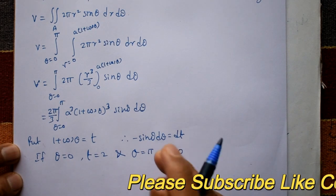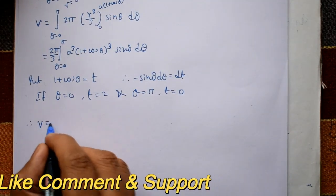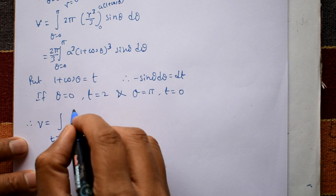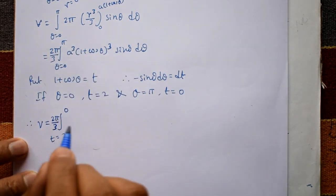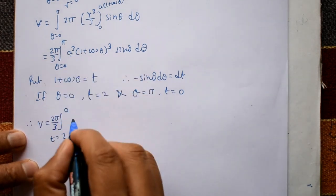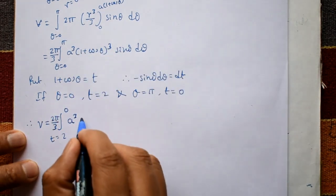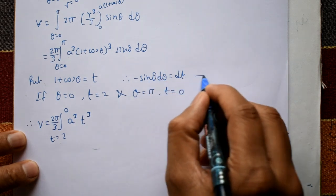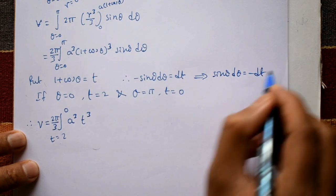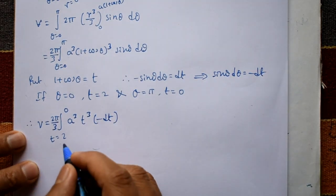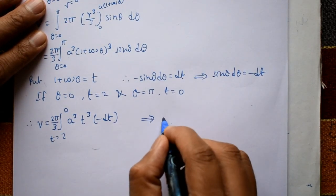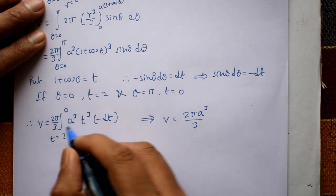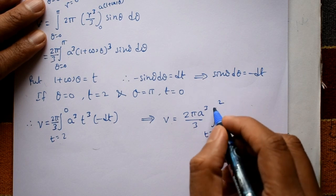After substitution, the integral becomes V = (2π/3) ∫ from t = 2 to t = 0 of a³ · t³ · (−dt). Taking a³ outside as a constant and making the sign positive by interchanging the limits, we get V = (2πa³/3) ∫₀² t³ dt.